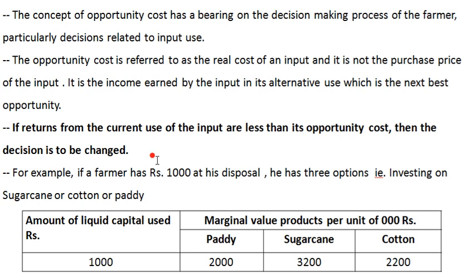It means if income from the current use of input is less than the opportunity cost, the decision is to be changed. The farmer or producer can then allocate inputs or resources to the next best alternative use or next best production activity in order to get maximum income from that particular economic unit.